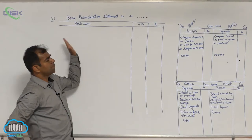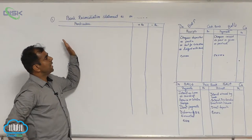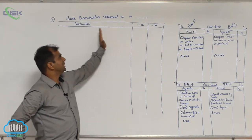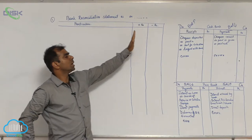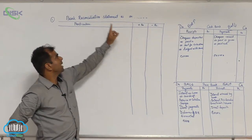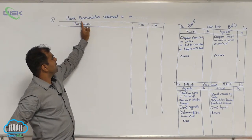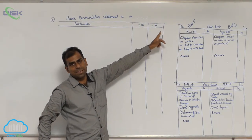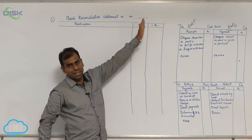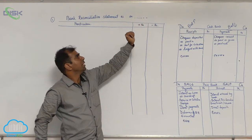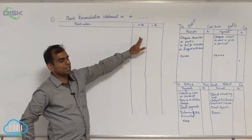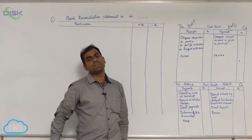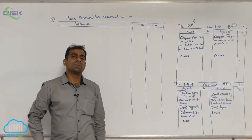We will be doing the first problem. The BRS format is a very simple format having a particulars column and two amount columns. The heading is 'Bank Reconciliation Statement as on' followed by the date. The first column takes amounts to be added and the second column takes amounts to be subtracted.